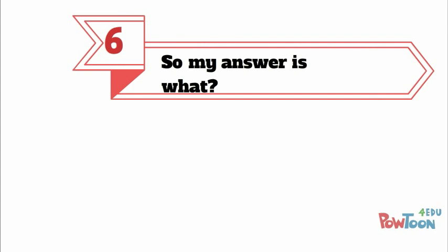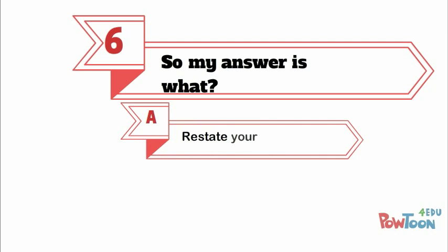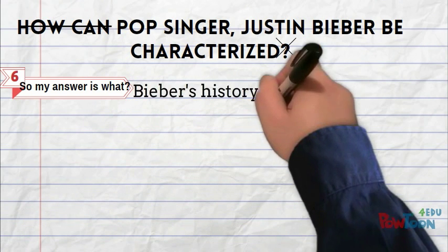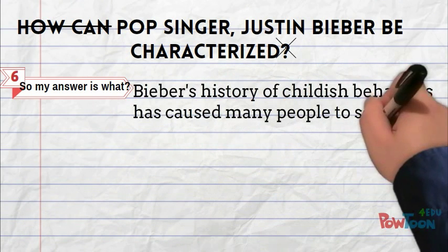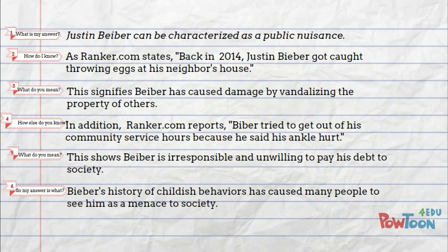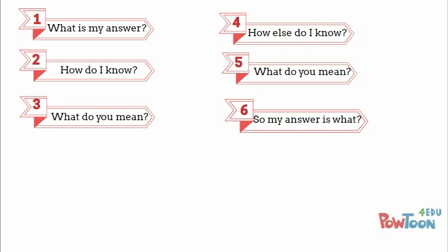And finally, step six: conclude. Ask yourself, so my answer is what? Wrap up your response by restating your answer in a new way. For example, Bieber's history of childish behaviors has caused many people to see him as a menace to society. Once you're done, read it together to make sure that it makes sense. And that's it — after you've answered these six easy metacognitive questions, you've got yourself an awesome answer. Just remember the steps and we know that you can do it.